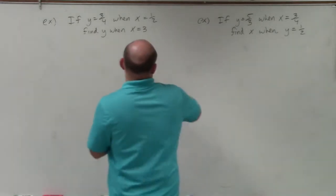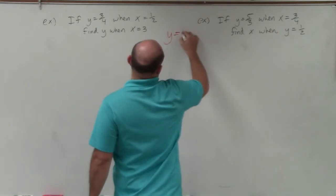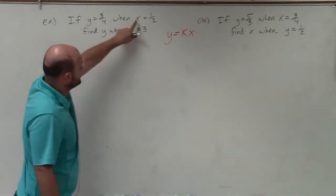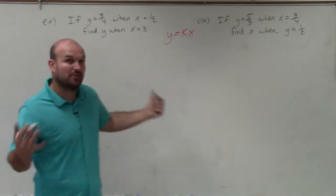Now remember, when y varies directly with x, we're given in our direct variation form. So what they're basically saying is y varies directly with x, and y varies directly with x for both of those equations.